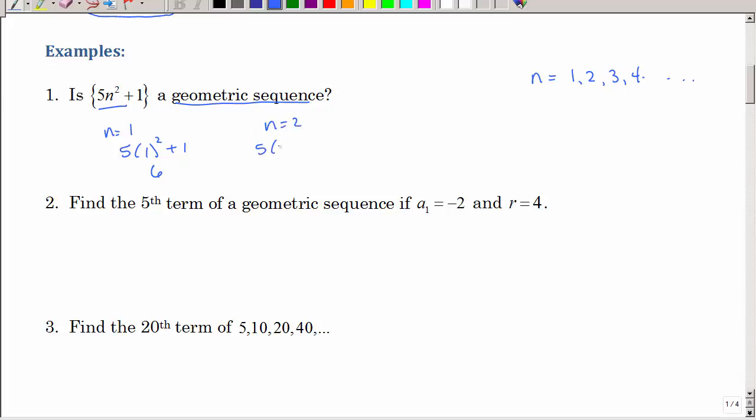If n is 2, 5 times 2 squared plus 1, so I believe that's 4 times 5 is 20 plus 1 is 21. And when n is 3, I get 9 times 5 is 45, plus 1 is 46, and keep going. Have I multiplied by the same thing each time?